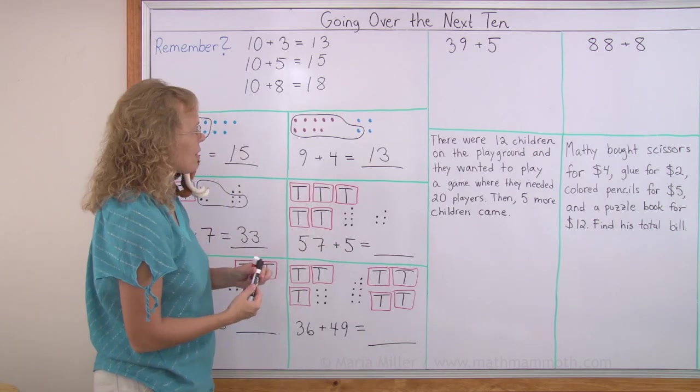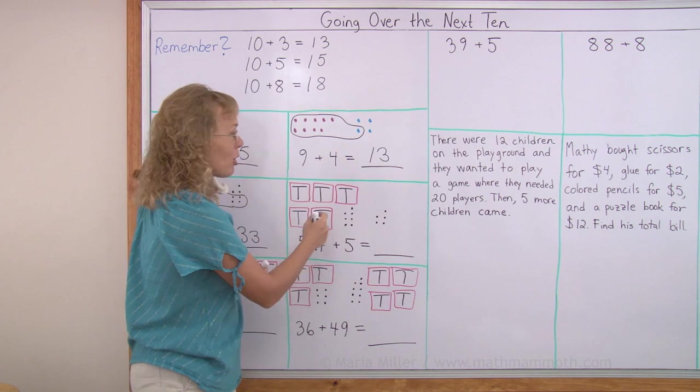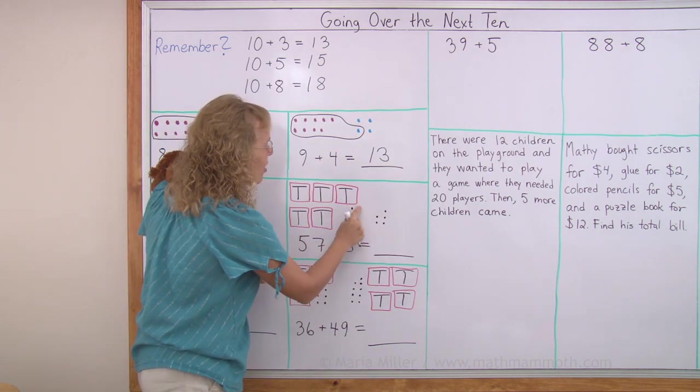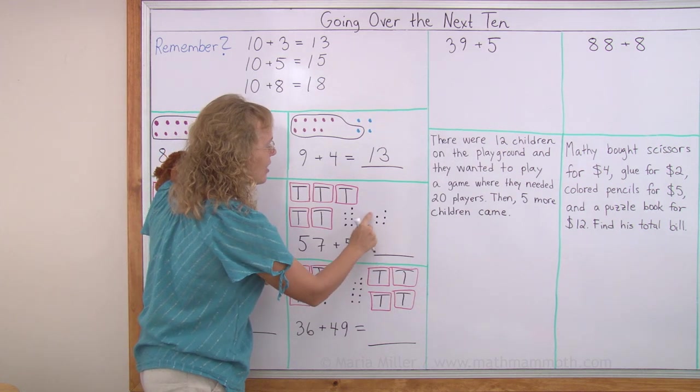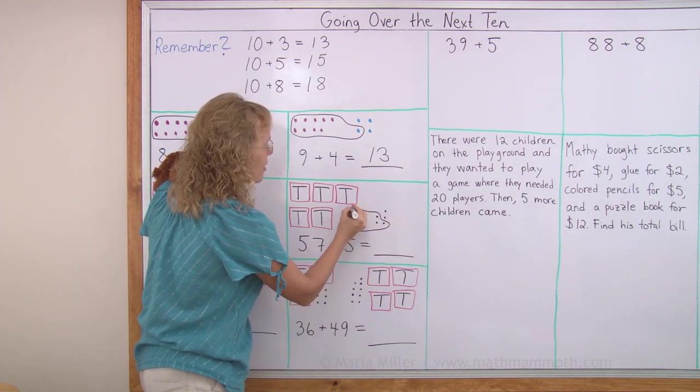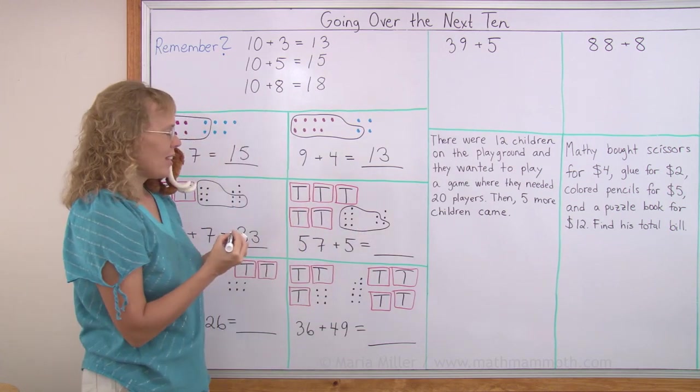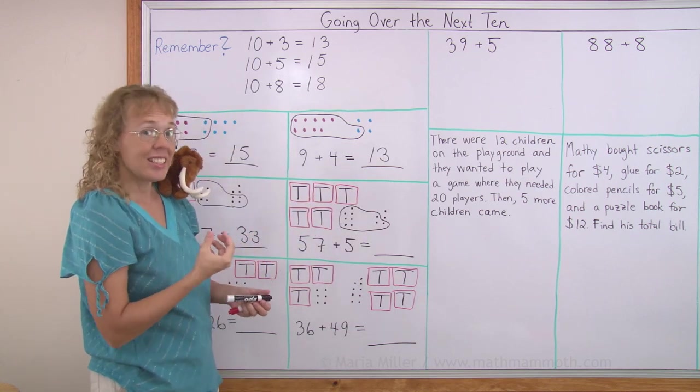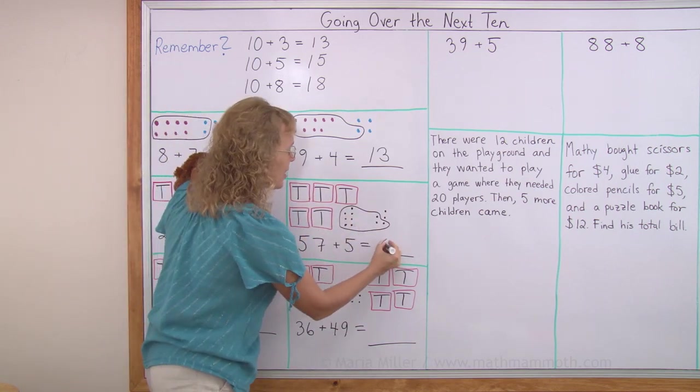Over here, 57 plus 5. This box with T is a 10, as you remember. So I take all these 7 dots and some from here, right? 3 from here, to make a new 10. And so now I have those 5 tens and a 6th 10. 6 tens and 2, 62.